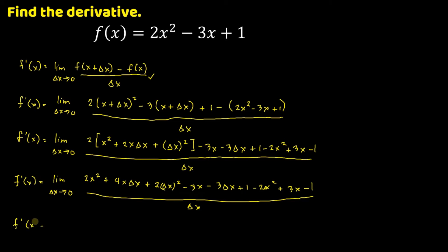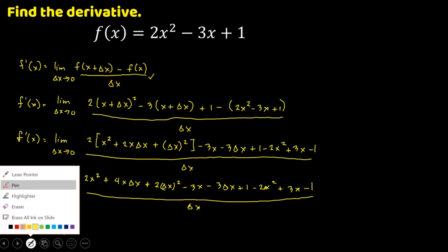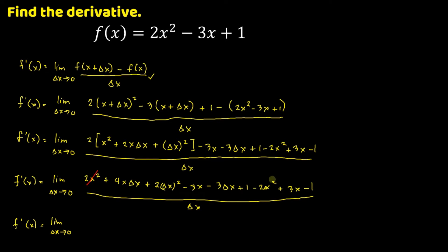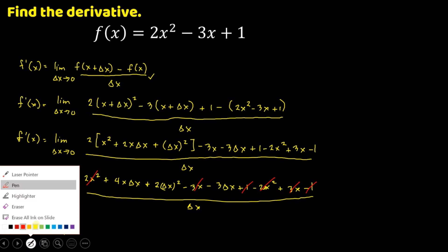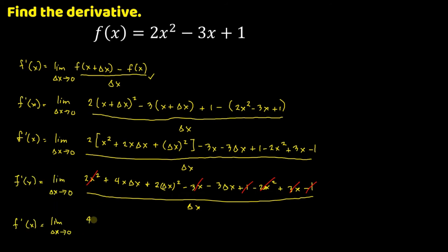So f prime of x equals the limit as delta x approaches 0. We can cancel 2x squared, because 2x squared minus 2x squared is 0. We have negative 3x plus 3x equals 0. And 1 minus 1 equals 0. So what remains is 4x delta x plus 2 delta x squared minus 3 delta x, all over delta x.